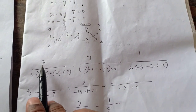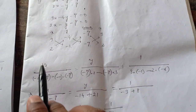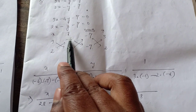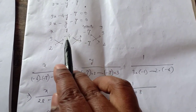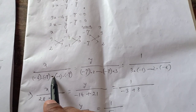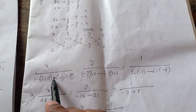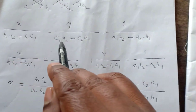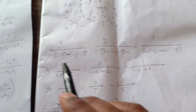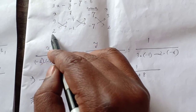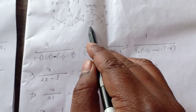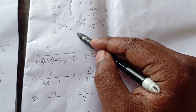Below X, remember, never write the coefficients of X. We shall cross multiply the coefficients of Y and the constants. First we multiply minus 4 into minus 7, then minus (minus 1 into minus 7). There is always a minus in between, according to the formula. Below Y, we shall not write the coefficients of Y; we shall cross multiply the constants and coefficients of X. First multiply minus 7 into 2, then minus (minus 7 into 3).